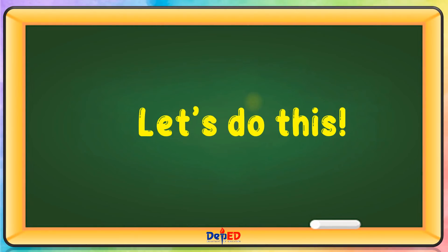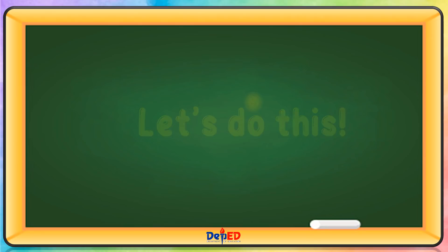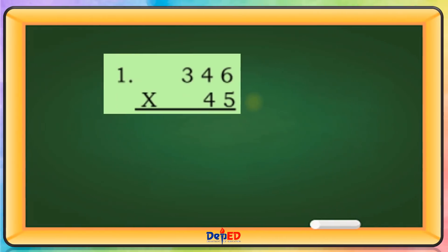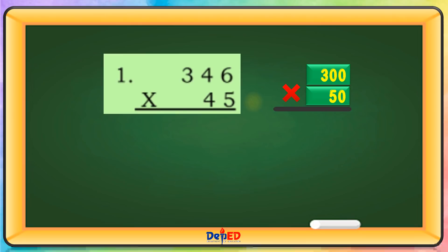Let's do this — find the estimated product. 346 will be rounded to 300 and 45 will be rounded to 50. 300 times 50 equals — let's just copy the three zeros. And multiply 5 times 3 equals 15. The estimated product is 15,000.